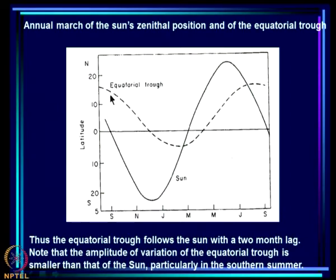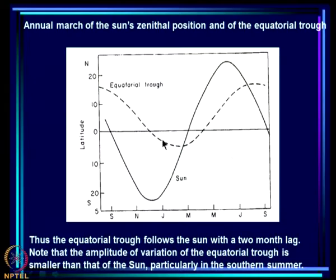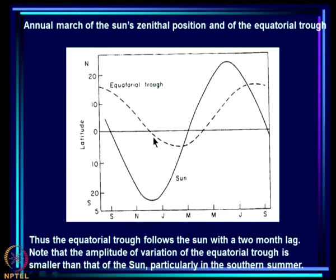An idealized picture shows the annual march of the sun's zenithal position and of the equatorial trough. The surface trough moves north in summer and comes south in winter — the equatorial trough is at its southernmost in December and northernmost in June, in response to the sun which has its southernmost location in December and northernmost in June. In response to the seasonal variation of the location of heating, there is a seasonal variation of the location of the surface trough.